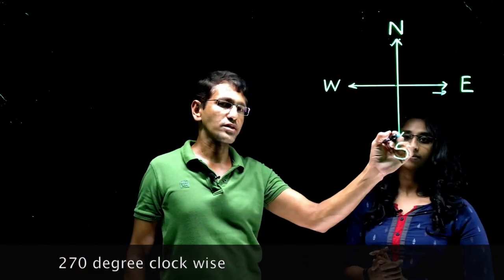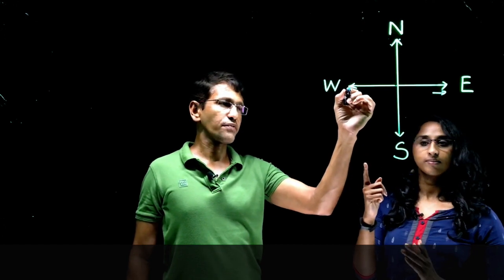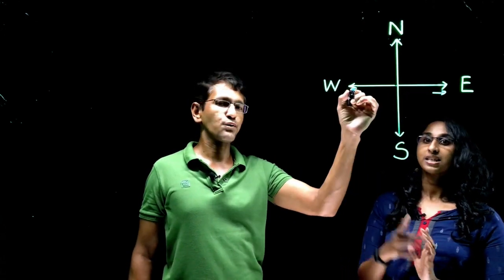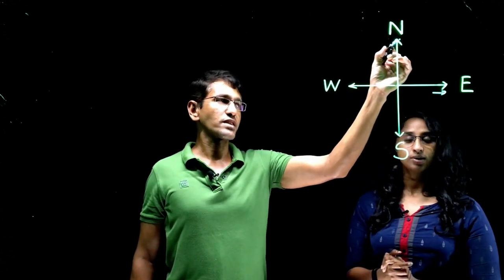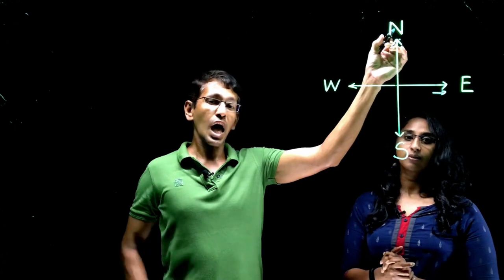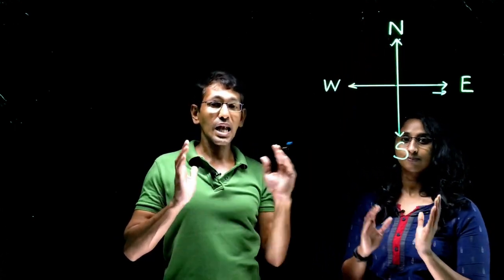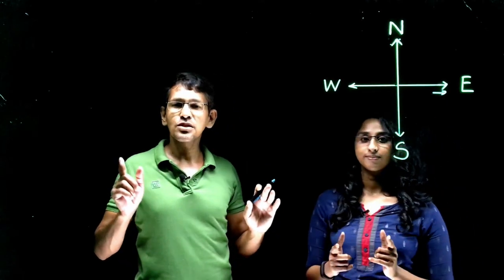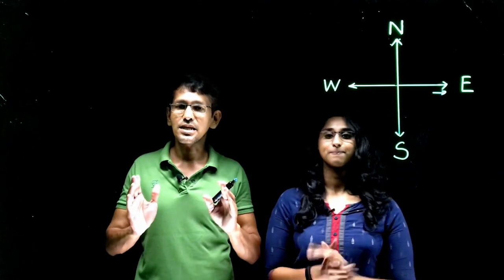Shilpa is facing East. From that point she turns 270 degrees clockwise. From East, turning 90 degrees she faces South; another 90 degrees she faces West — that's 180 degrees. Then one more 90 degrees makes 270 degrees total, so now she is facing North. That is followed by a left turn — remember school assembly — a left turn is always a 90-degree turn.